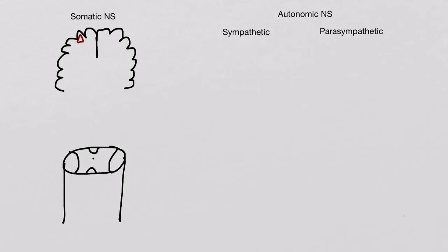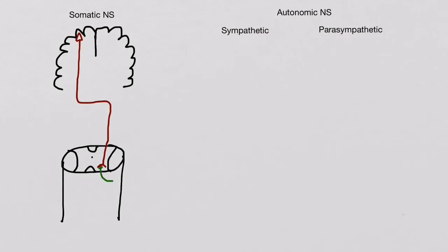Most of the motor fibers will begin in the cerebral cortex and descend into the medulla oblongata. It is here that it will decussate or cross over to the contralateral side. Then it will travel down the spinal cord and synapse at the ventral horn. The next neuron will travel out and synapse at a muscle. This is called a neuromuscular junction.